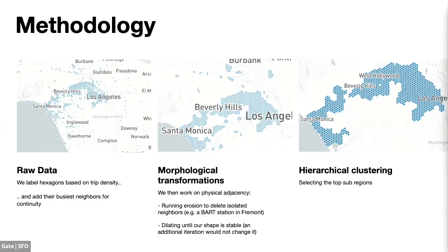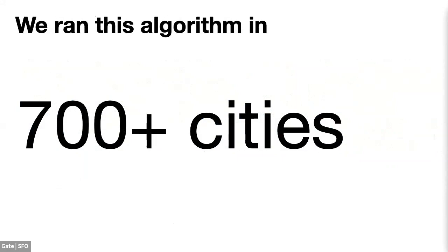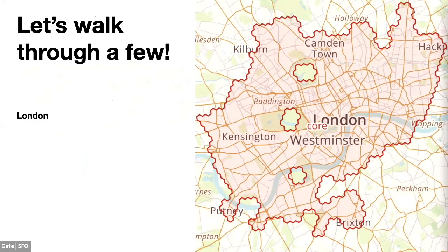To get that smoothing and work with the physical adjacency of the cells, we use those morphological transformations. Erosion helps remove those isolated places we just mentioned, and then we dilate the shape to make it visually cleaner. Once we have those large sub-regions, we perform a simple hierarchical clustering to distinguish one sub-region from another and sort them, selecting only the top ones as the core. We ran this algorithm across all Uber cities — more than 700.